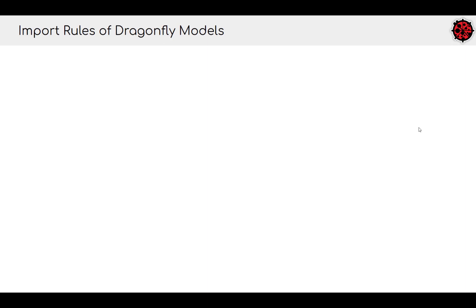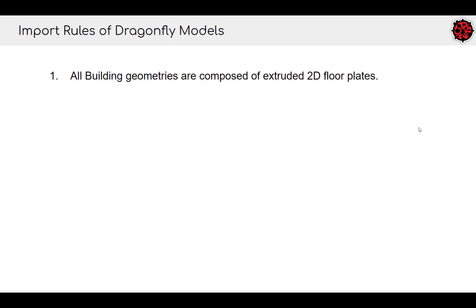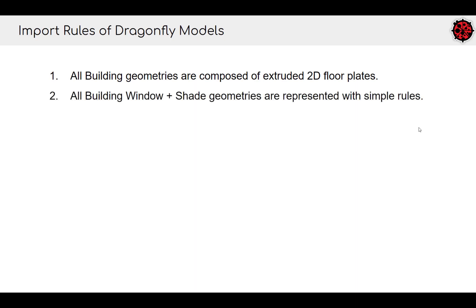To summarize the important rules of Dragonfly models: all Dragonfly building geometries are composed of extruded 2D floor plates. This is a limitation — there are certainly curvy-roofed buildings that aren't ideal for the Dragonfly schema. But at the urban scale, the vast majority — 90-plus percent of buildings — fall under this assumption of extruded 2D floor plates, which makes it much easier to build large models.